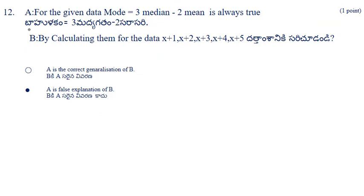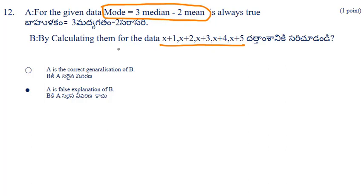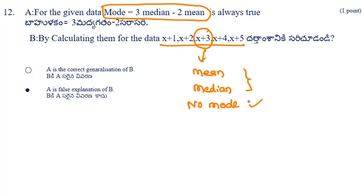Statement A: mode = 3 × median − 2 × mean — this is the empirical relation between mean, median, and mode. Statement B uses the data x, x+1, x+2, x+3, x+4, x+5. For this data, x+3 is both the mean and median, and there is no mode, so we cannot verify the empirical relation using this data. Therefore A is false.